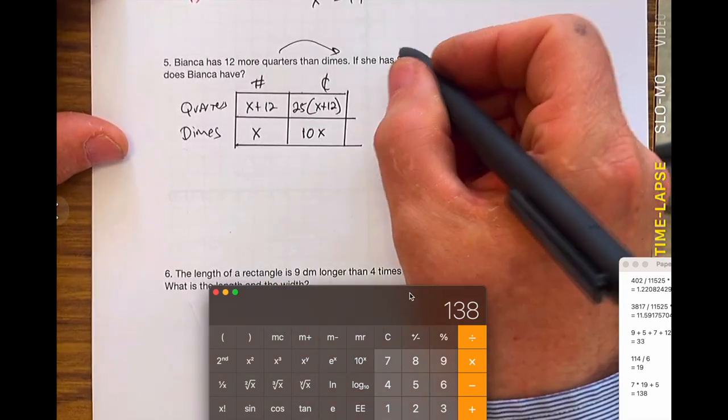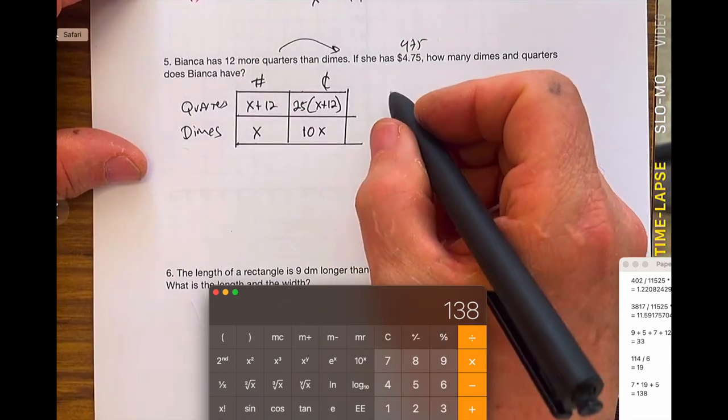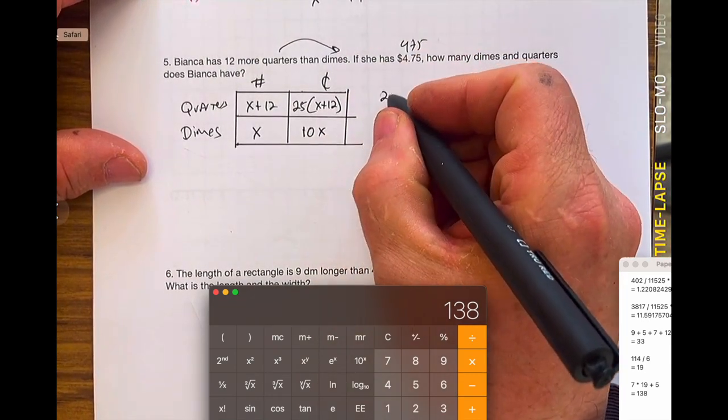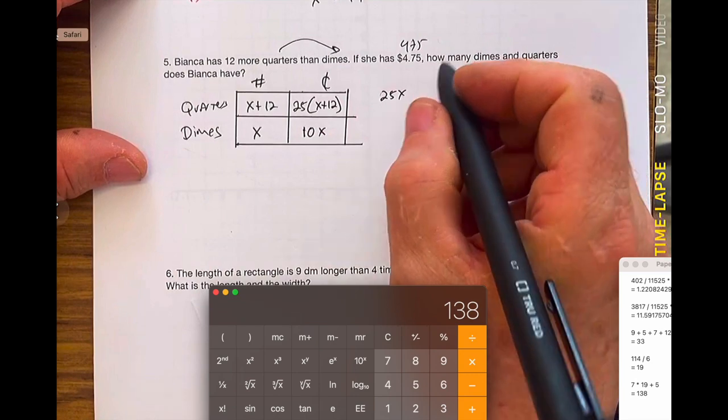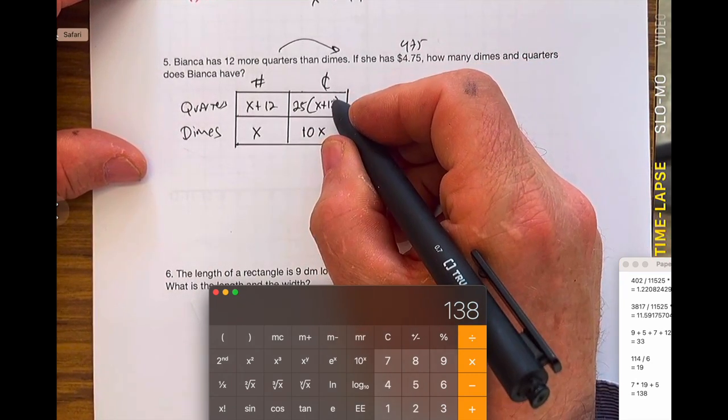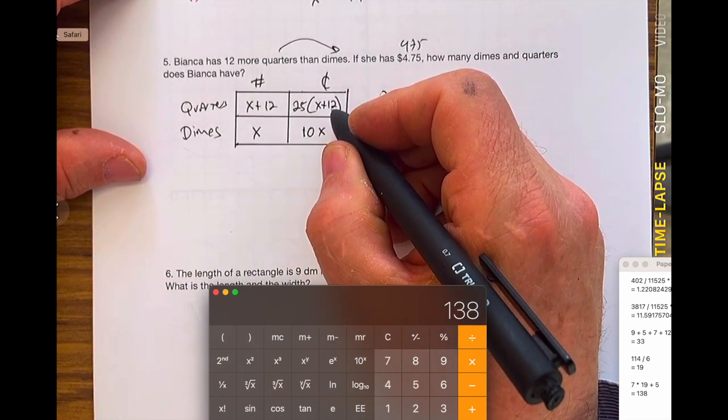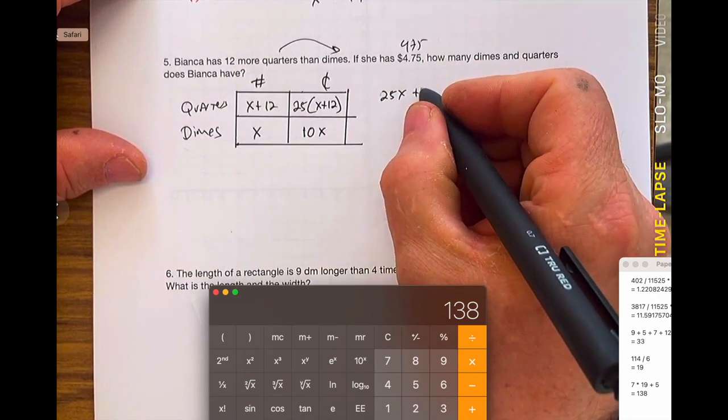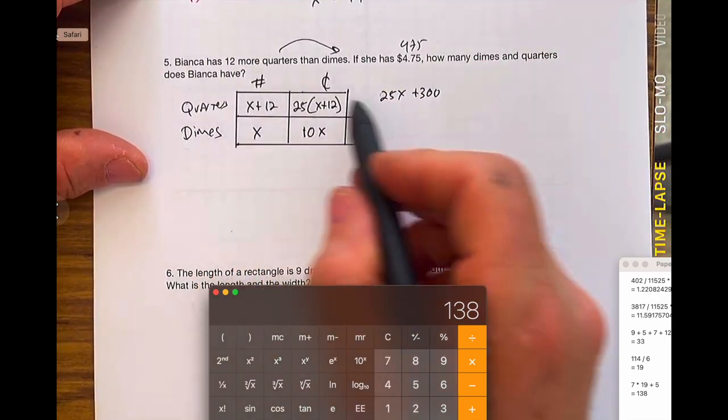She has 475 cents. We know that the value of the quarters, which is 25 times X, is 25X. 25 times 12. Four quarters is a dollar, and I have 3 times 4 is 12, so I have $3. So plus 300 cents. That's the quarter.